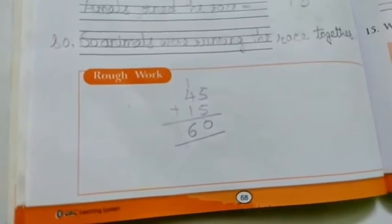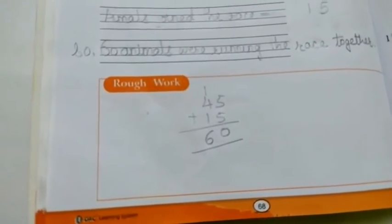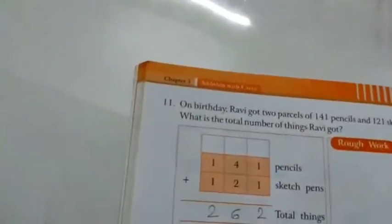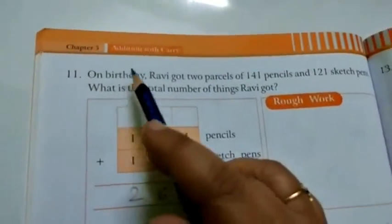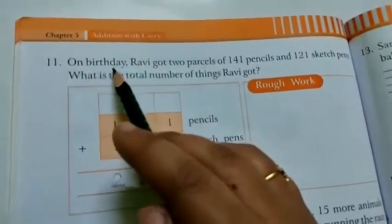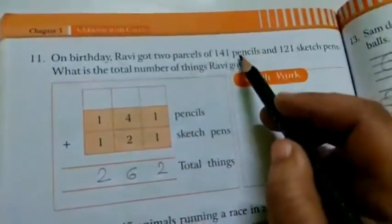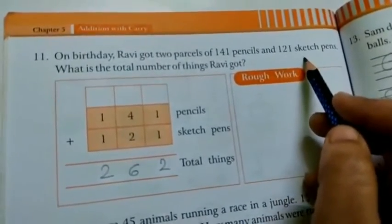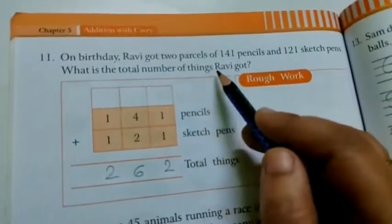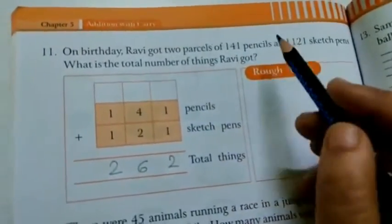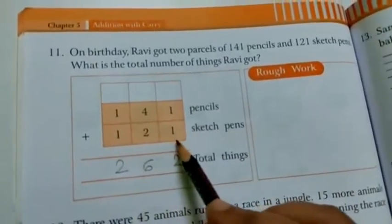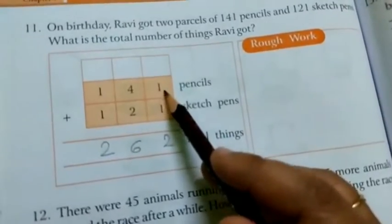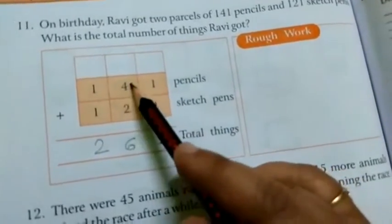Remove your observation book, page number 68. On question number 11, word problems. On birthday Ravi got 2 pencils of 141 pencils and 121 sketch pencils. What is the total number of things Ravi got? So 141 plus 121.